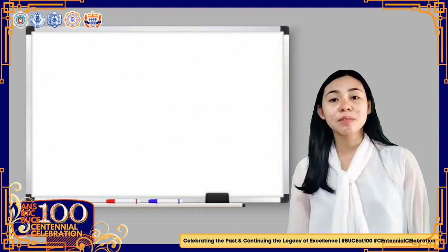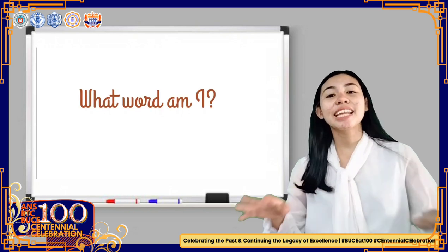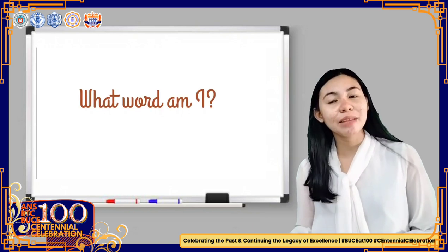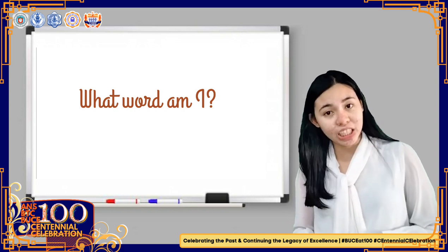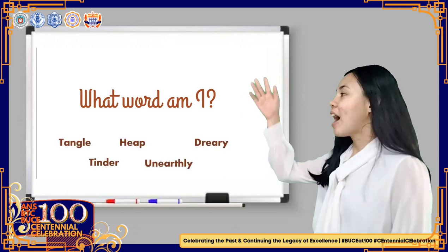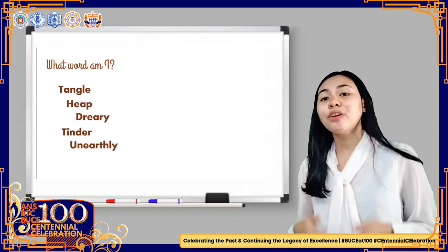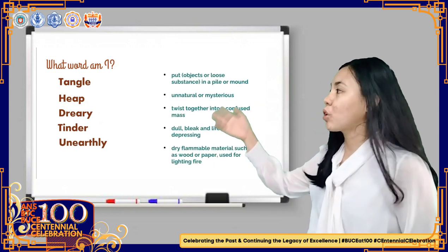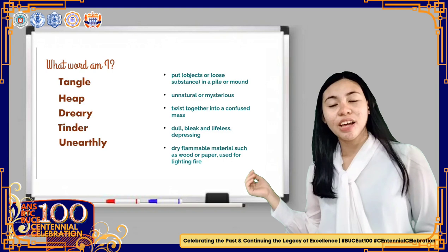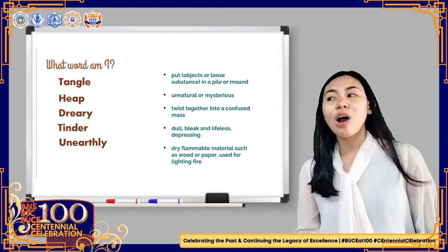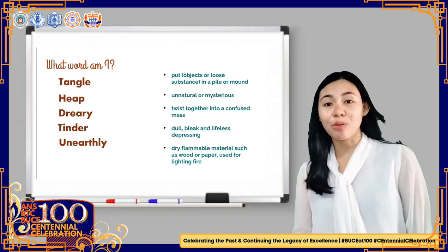Since everyone is here, let us play a game and I call this one as 'What Word Am I?' Settle down — I know that you're all excited but I need you to sit down and listen carefully to my instructions. I have five definitions here and five words, and I need five students from the class to try to identify which of these words is appropriate for each definition. Thank you everyone for participating. Please take note of these words because you're going to encounter them later in our discussion.